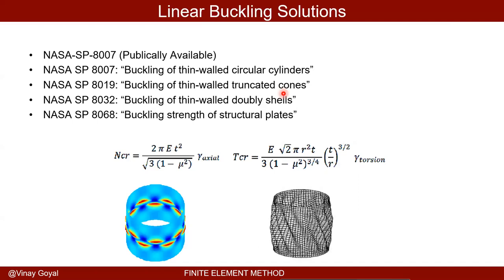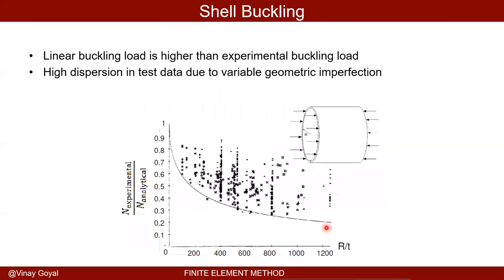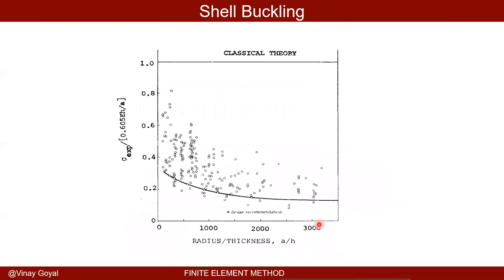NASA SP-8007A is a newer version of the guideline. NASA SP-8007 provides buckling of thin-wall circular cylinders. NASA SP-8019 provides it for thin-walled truncated cones. NASA SP-8032 provides buckling of thin-walled doubly-curved shells. NASA SP-8068 provides buckling strength of structural plates. Those guidelines can be downloaded for hand calculations. SP-8007A goes a step further and teaches you how to derive the knockdown factor curve using analysis — the state-of-the-art approach.